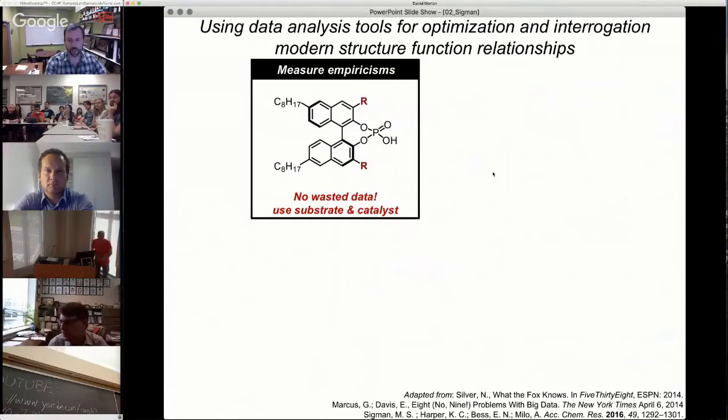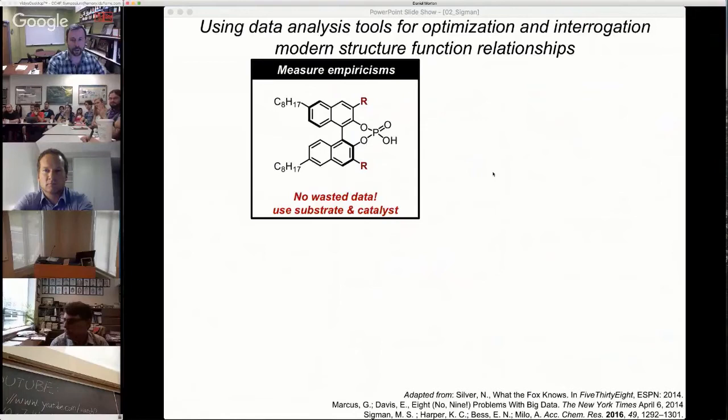What we think about is everyone who does optimization in the laboratory is going to have an empirical set of data. You take some sort of structure, it could be substrate, catalyst, or material, and you make general modifications to that structure and see what happens. Our hypothesis or mantra is that when we do such a campaign, an optimization campaign, every single experiment you run is a physical organic experiment. If your output is site selectivity, yield, or enantioselectivity, each one of those data points, whether it be good or bad, is important for understanding how you can both optimize and hopefully understand what's going on in your reaction.